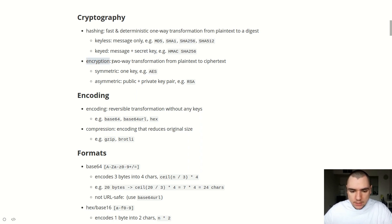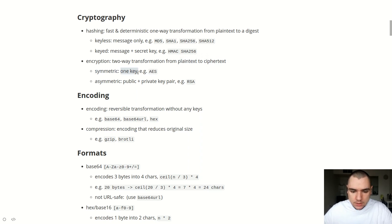Moving on to encryption — essentially it's a two-way transformation from plain text to ciphertext. With hashing, when you produce a hash from plain text, in theory you're not able to go back from that hash to plain text. With encryption, it's different: you can encrypt a string from plain text to ciphertext, but you're also able to — using the same secret key or a pair of secret keys — go back from ciphertext to plain text and restore the original string. There are two kinds: symmetric, where you use one single key (e.g. AES), and asymmetric, which uses a pair of public and private keys (e.g. RSA).